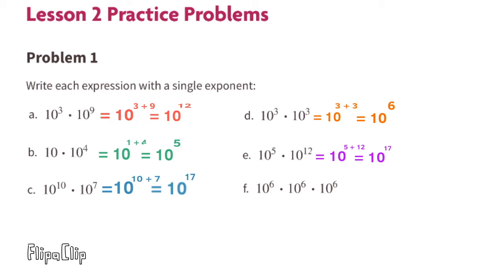Part F: 10 to the power of 6 times 10 to the power of 6 times 10 to the power of 6. Exponent 6 plus exponent 6 plus exponent 6 equals exponent 18. So 10 to the power of 6 times 10 to the power of 6 times 10 to the power of 6 equals 10 to the power of 18.